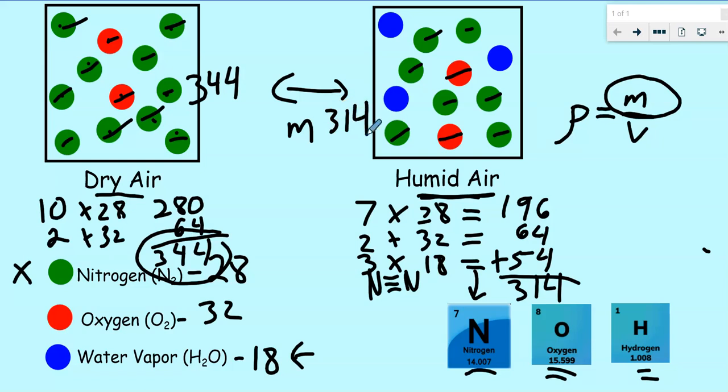So which one of these boxes is heavier, has more mass? In our dry air we have a mass of 344, and in our humid air we have a mass of 314. So which one is more dense? The answer is our dry air. Dry air is more dense. Can you explain why? That's because dry air is composed more of nitrogen and oxygen and less water, and nitrogen and oxygen both have a higher mass than water vapor. Whereas humid air has displaced some of the oxygen and nitrogen with water, which has a lower mass.